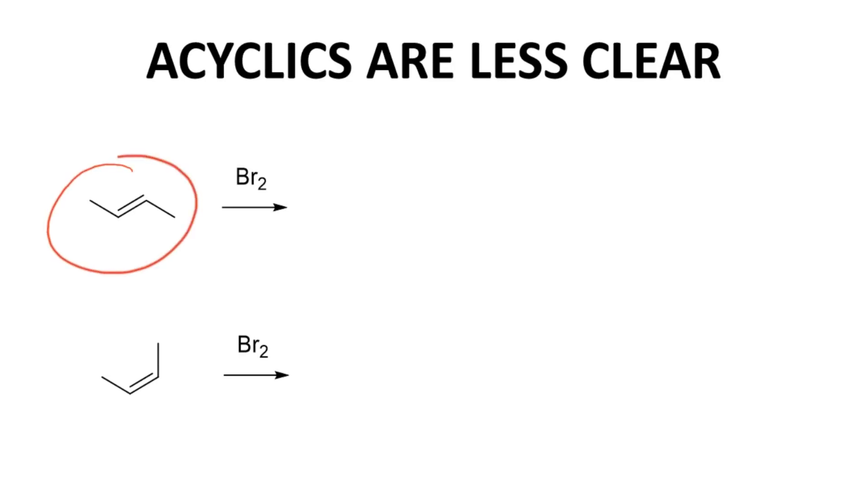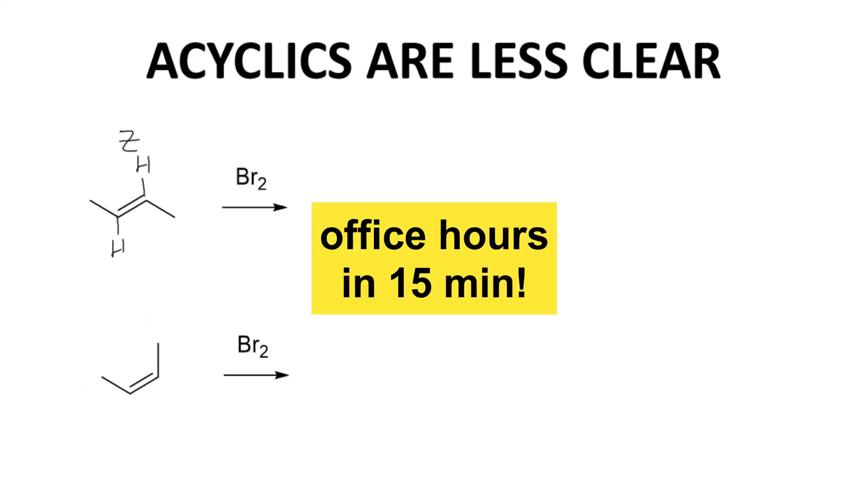These are two alkenes, two different alkenes. One is the Z alkene. We can add hydrogens to make everything more clear. The other is the E alkene with the hydrogens.